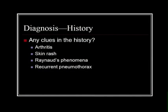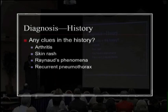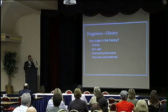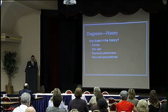Look for clues in the history: does the patient have arthritis, a known collagen vascular disease, a skin rash, Raynaud's phenomena, or recurrent pneumothorax? I recently had a patient with Raynaud's phenomena and telangiectasias whom we eventually diagnosed with CREST syndrome, so these historical details can be very useful.